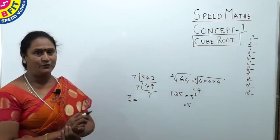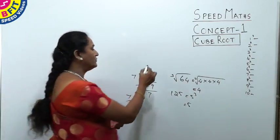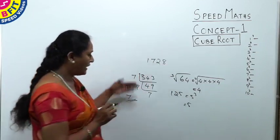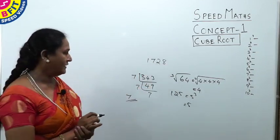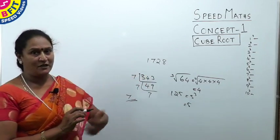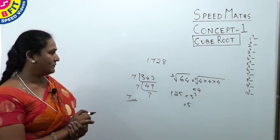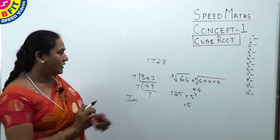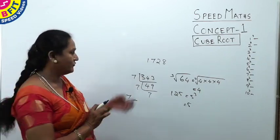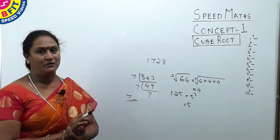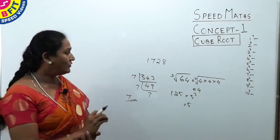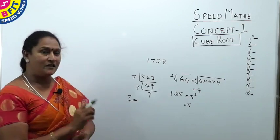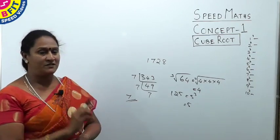We have found cube root of 8 using the factorization method — for every 3 numbers, 1 number is taken out. But splitting into factors takes time; it will take at least 2 or 3 minutes to factorize and find the cube root. Now I will tell you how to find cube root as soon as you see the number — it is the easiest one among all the speedmath techniques.